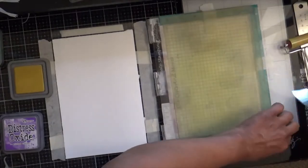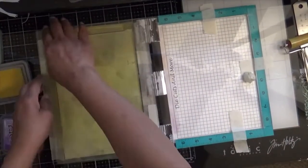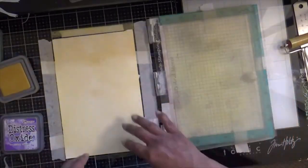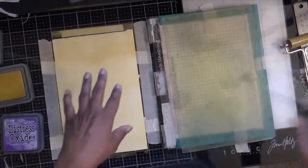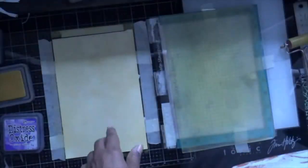So I'm starting out with a lighter color. This is Fossilized Amber Oxide Inks. And I'm just going to stamp the entire page. I love this technique. I wish I had thought of this myself.